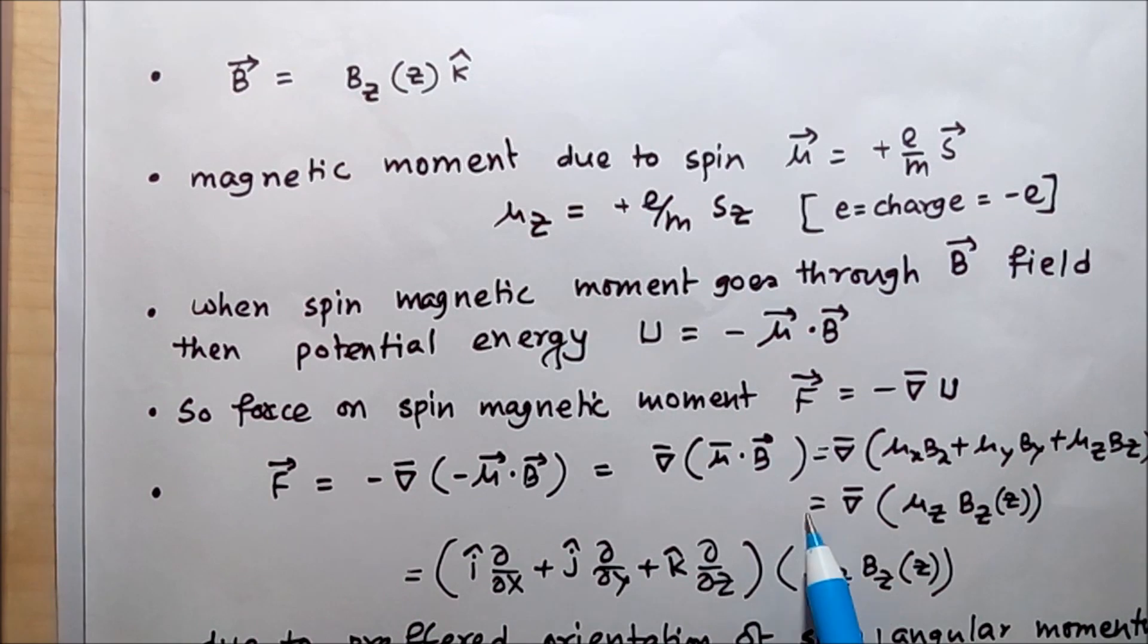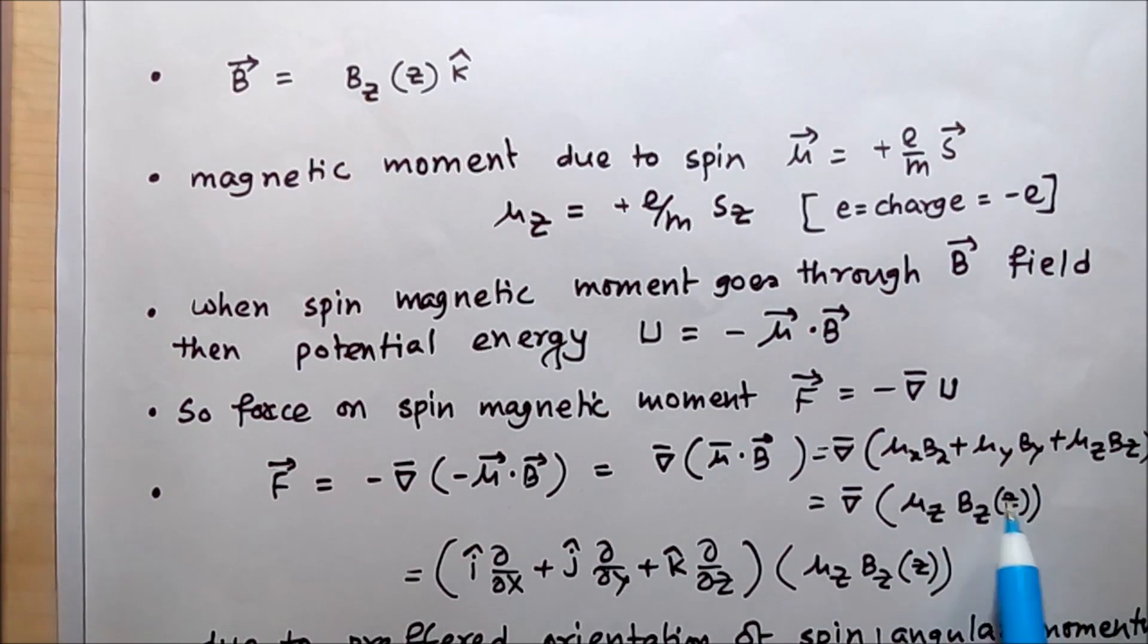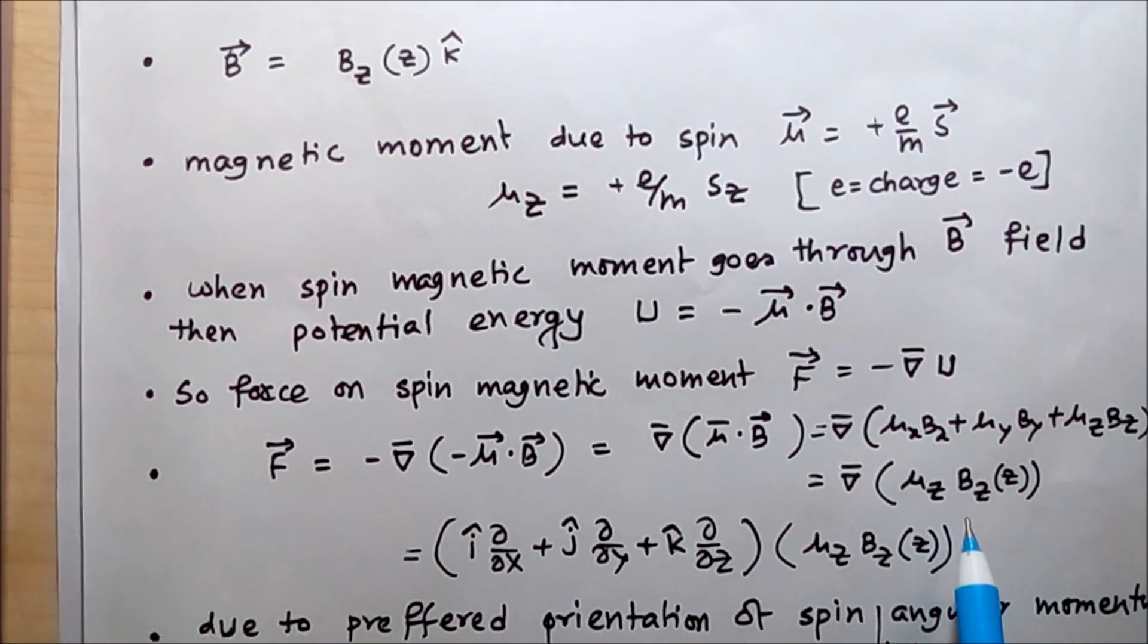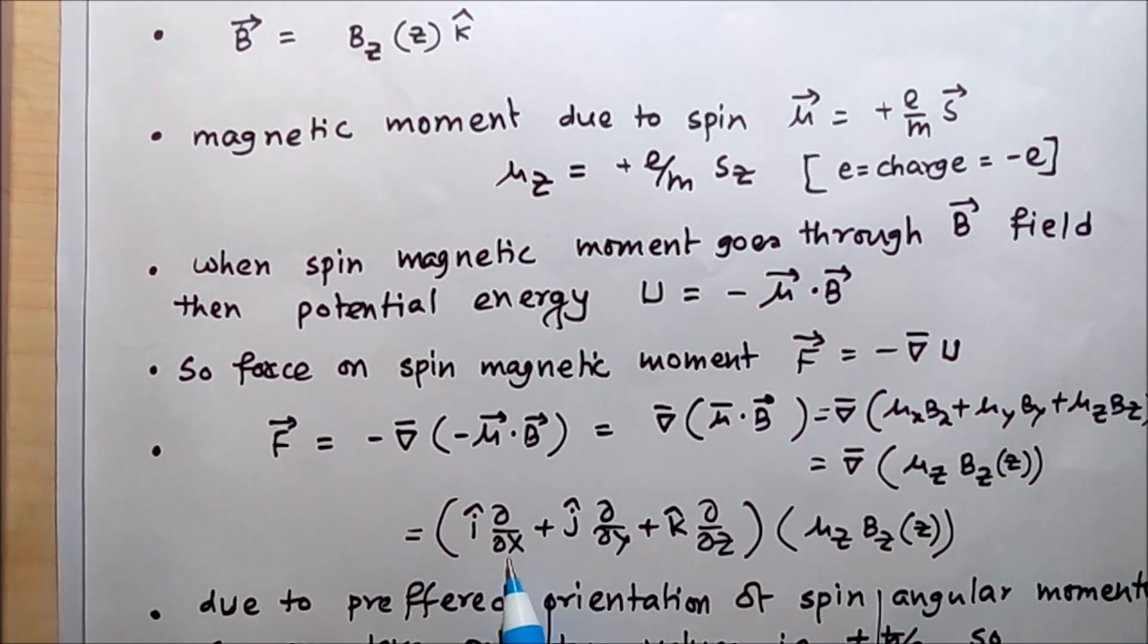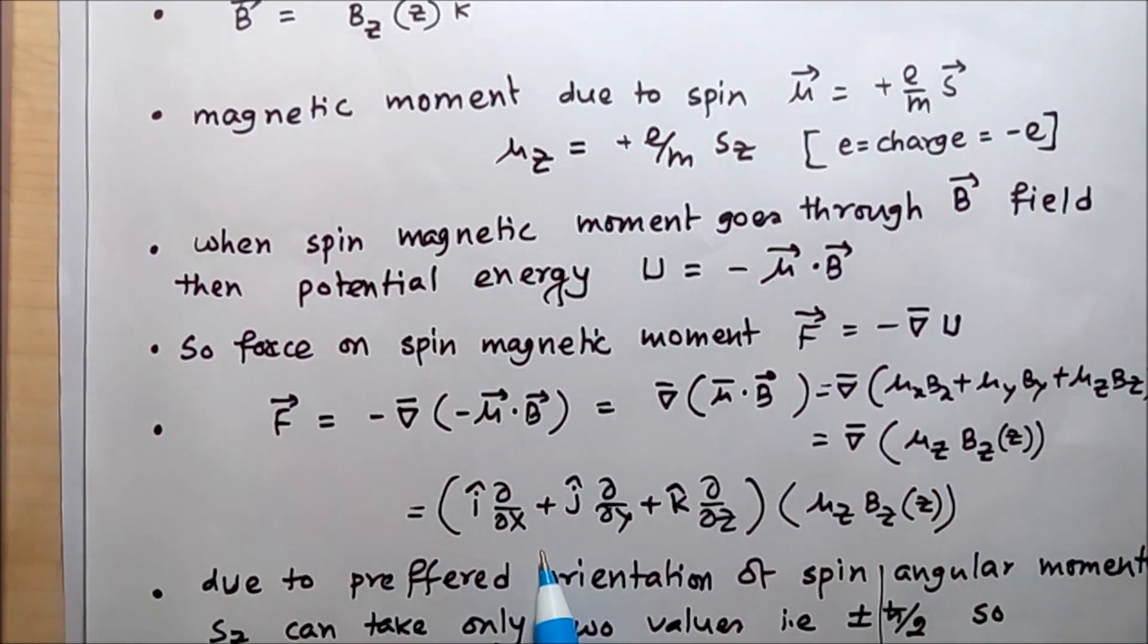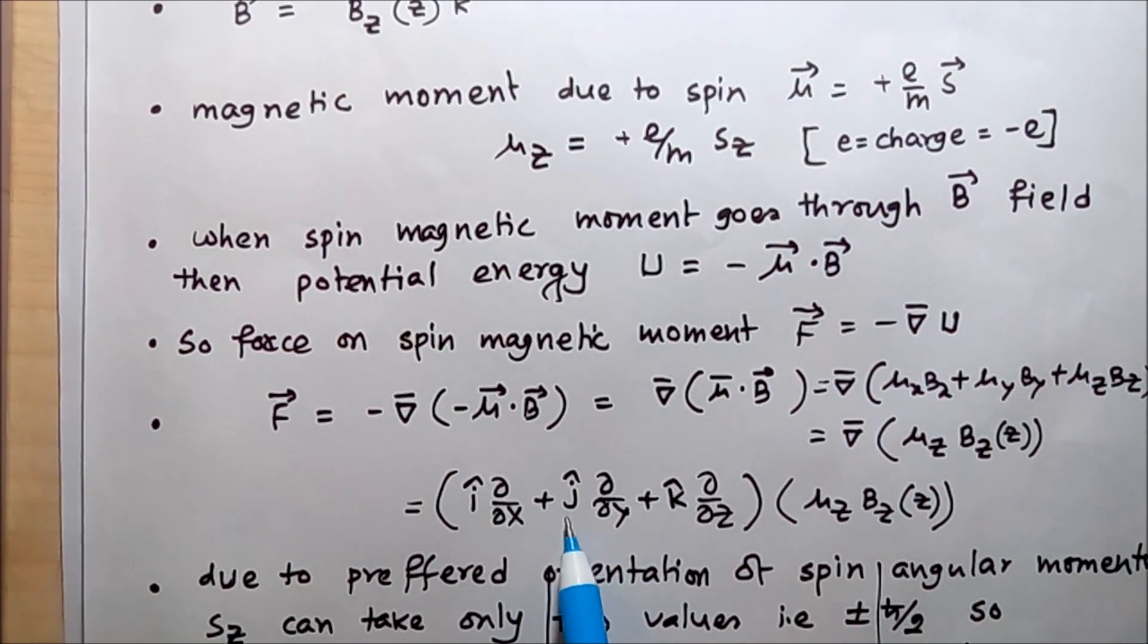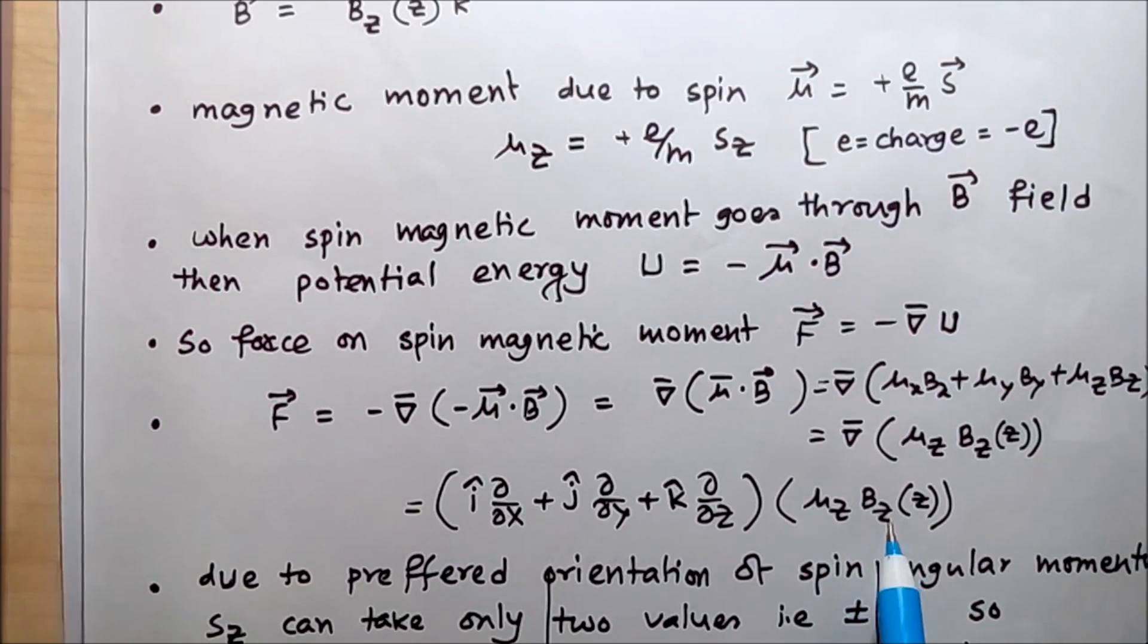The gradient operator can be explicitly written as (î ∂/∂x + ĵ ∂/∂y + k̂ ∂/∂z) times μ_z B_z.